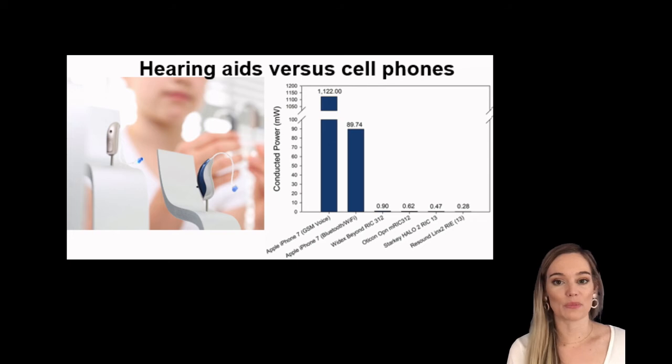So this is a graph comparing the SAR rates of cell phones versus hearing aids. So basically they connected an iPhone 7 to Bluetooth and also made a phone call and measured the SAR values and then also connected hearing aids to bluetooth and measured the SAR values from there. And you can see that the cell phone emits far more electromagnetic energy or heat than what the hearing aids do. In fact the hearing aids you can barely even see the bar graph.